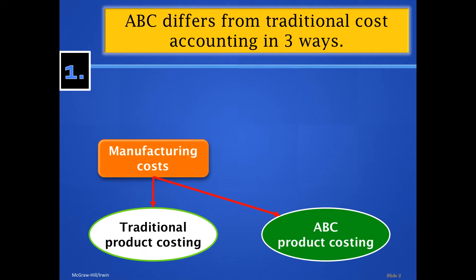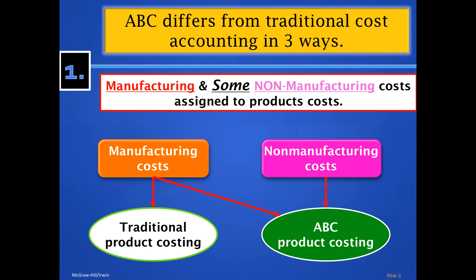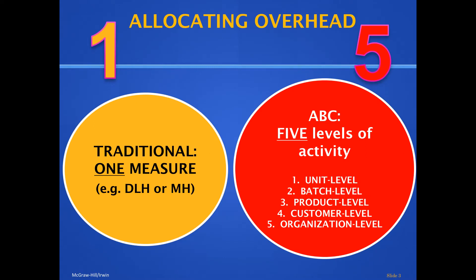ABC costing is different from the regular ones we've been learning. One key difference is that manufacturing costs as well as some non-manufacturing costs are assigned to product costs — a complete deviation from previous chapters where we only focused on manufacturing costs. Here we're trying to get an overview of all costs entailed in making, producing, and selling a product.